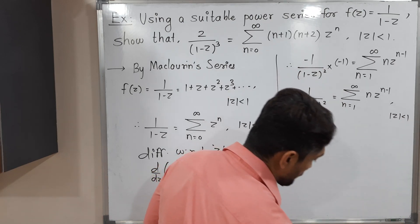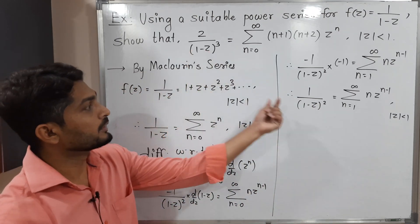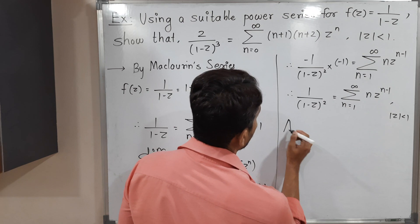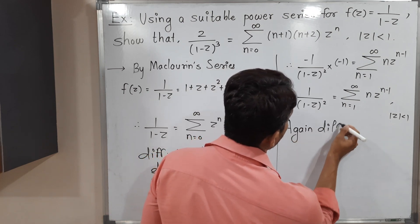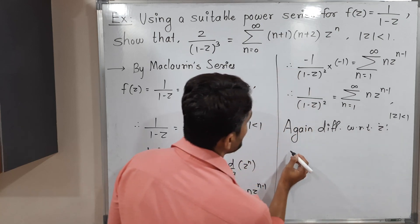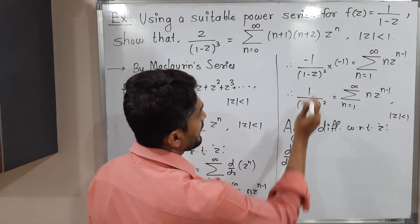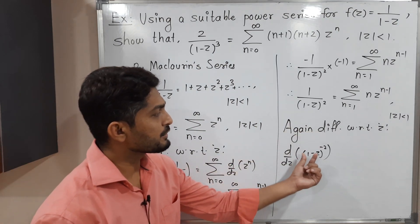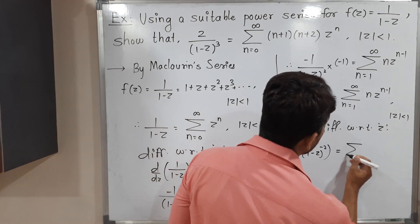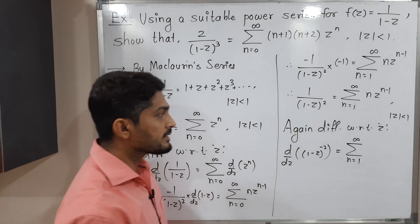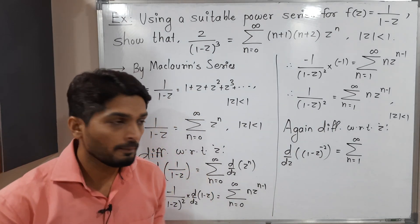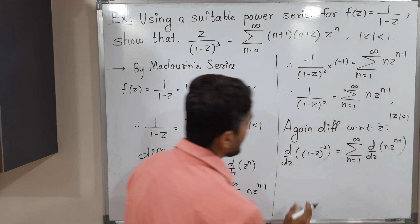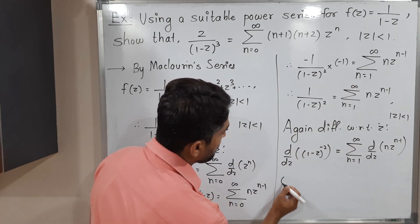Now we want the bracket cubed, but right now we only have bracket squared, so one more differentiation is required. Let us differentiate again with respect to z. I am going to shift the bracket to the numerator, so the power becomes negative: 1/(1-z)² becomes (1-z)^(-2). Again applying term-by-term differentiation, since the power series is convergent we can interchange the derivative and summation.